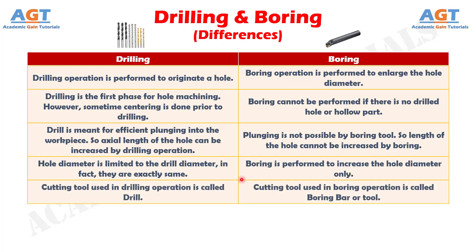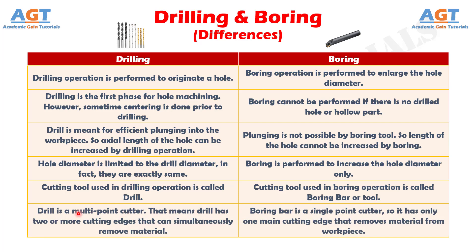Number 5: The cutting tool used in drilling operation is called a drill, whereas the cutting tool used in boring operation is called a boring bar or tool. Number 6: Drill is a multipoint cutter, meaning it has two or more cutting edges that can simultaneously remove material, whereas a boring bar is a single point cutter, so it has only one main cutting edge that removes material from the workpiece.